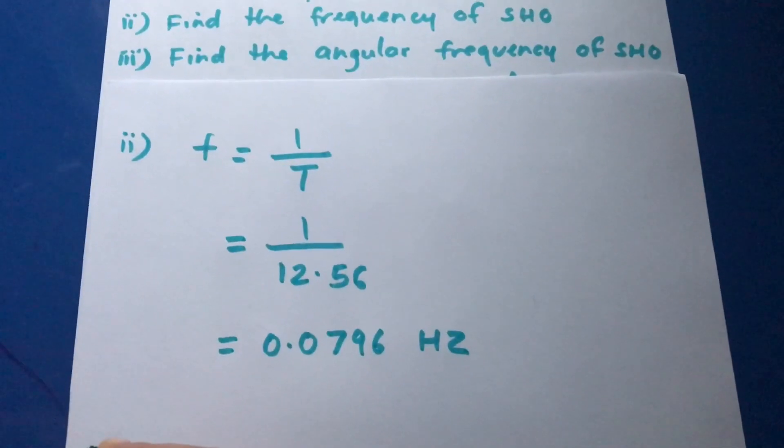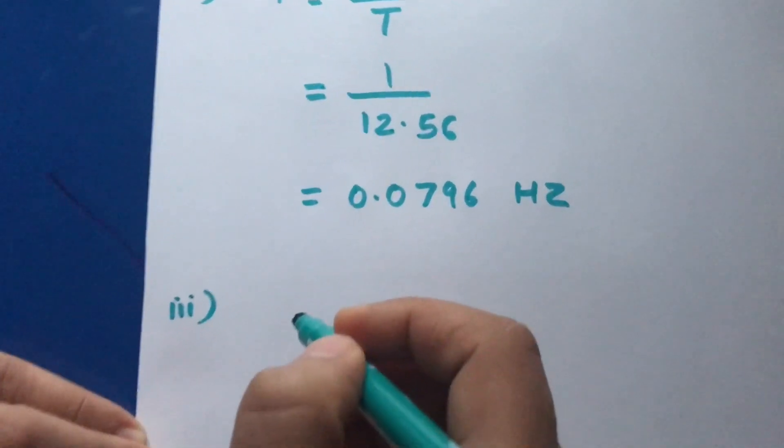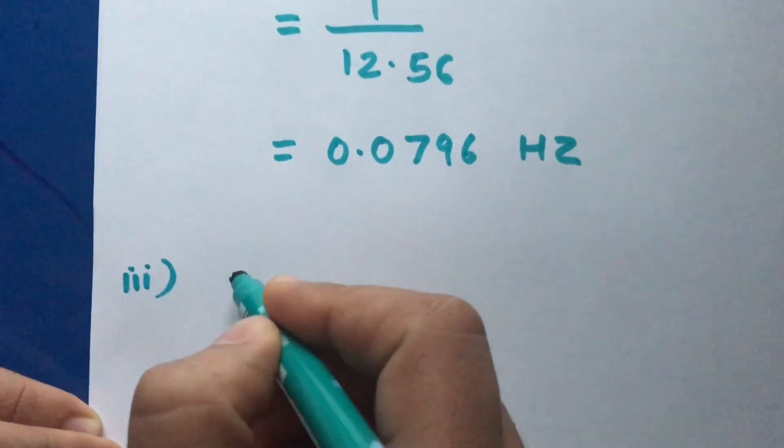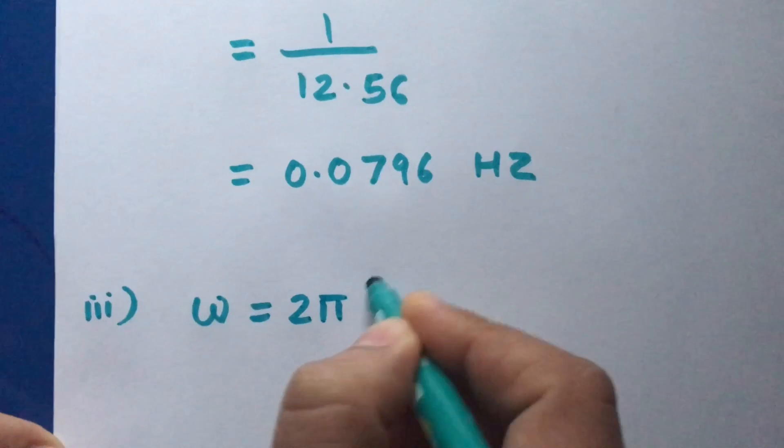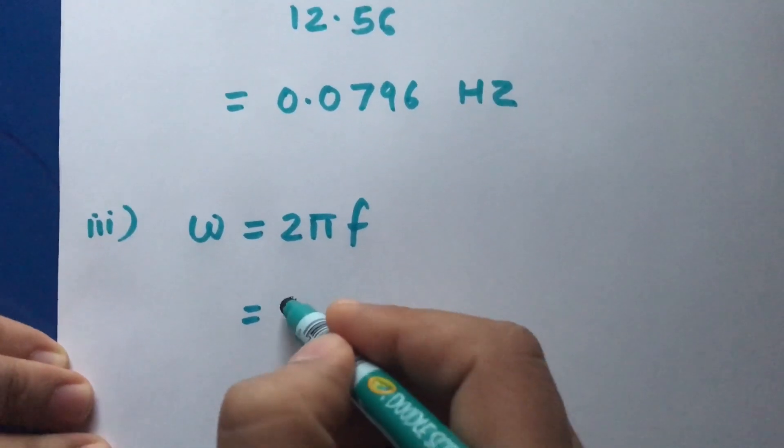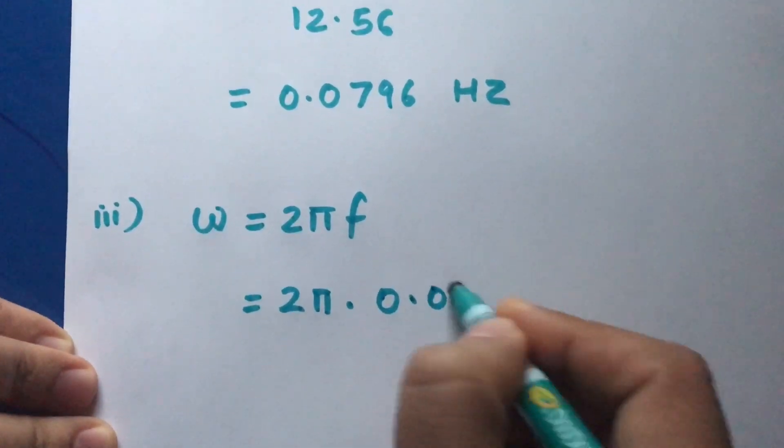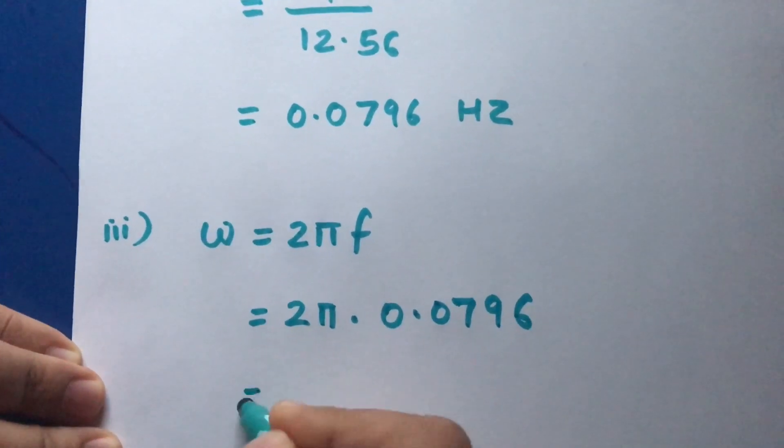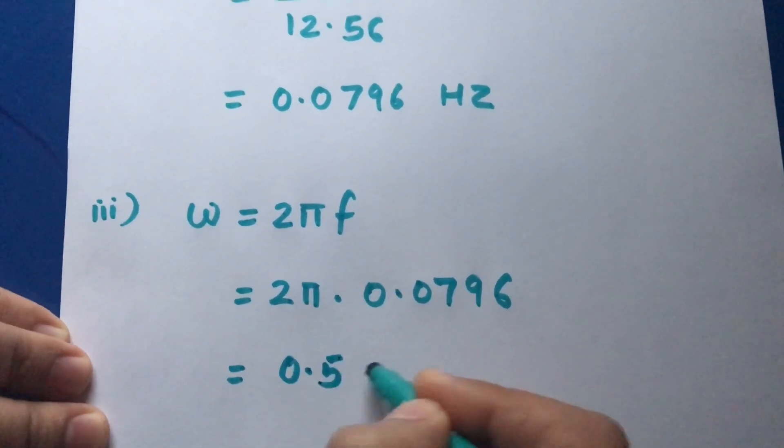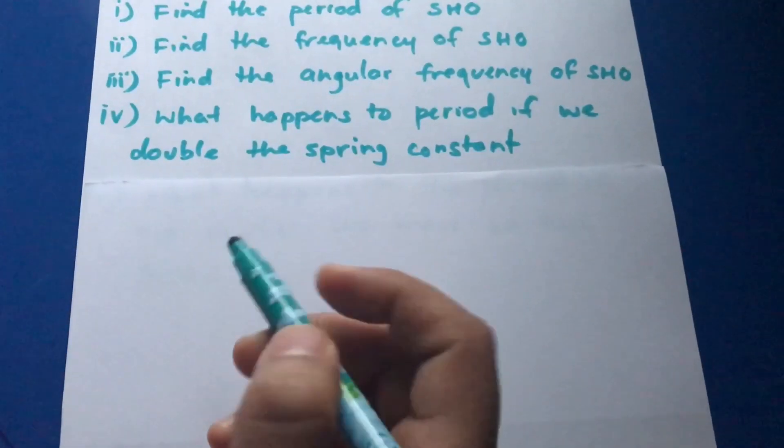In the third part, you have to calculate the angular frequency of SHO or simple harmonic oscillator, which is given by 2π times f. This is 2 times π times 0.0796, and this is actually 0.5 radians per second.